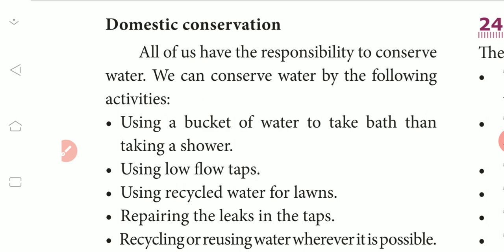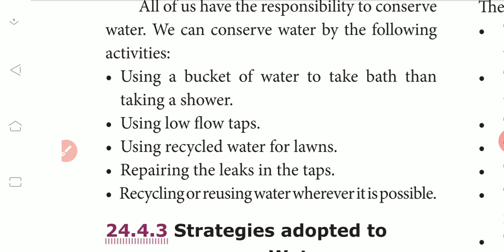Using low-flow taps to reduce water usage. Using recycled water for lawns. Repairing leaks in taps — when a tap leaks, it should be repaired promptly. Recycling or reusing water wherever it is possible.